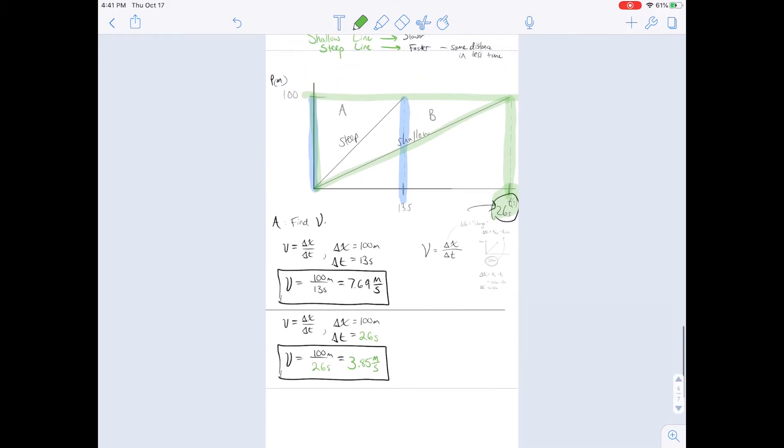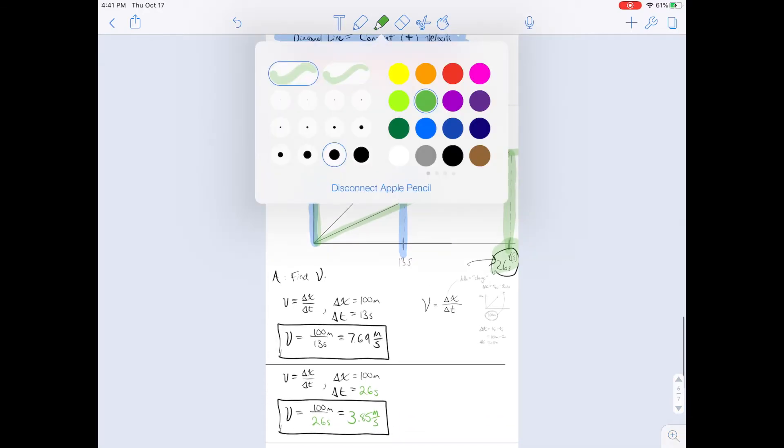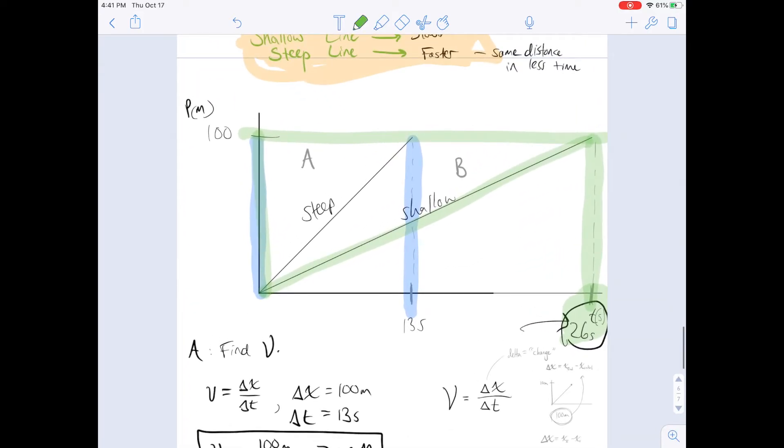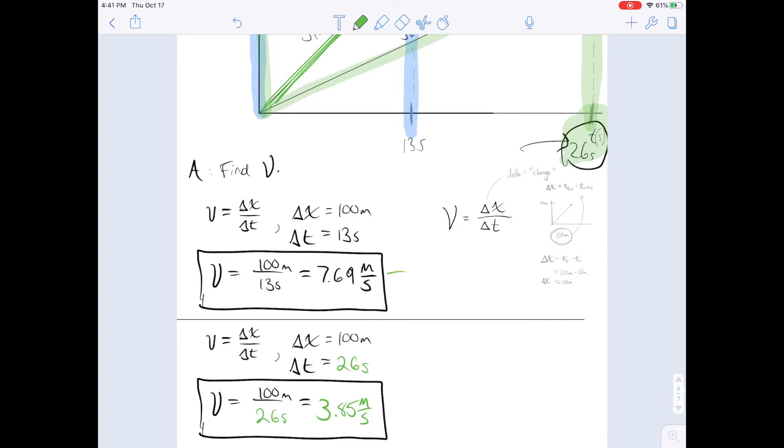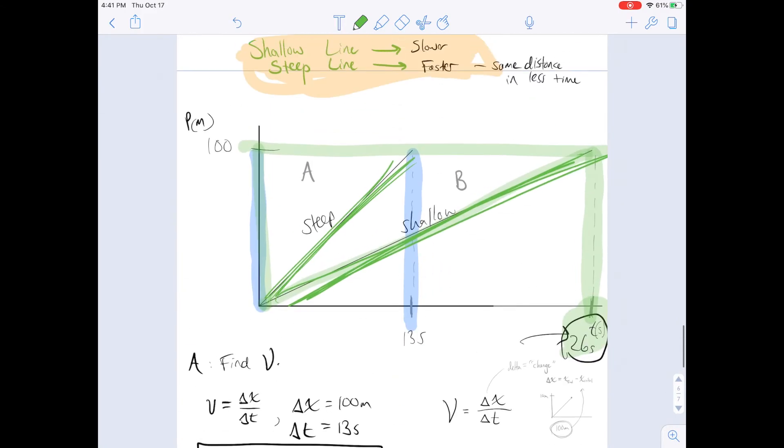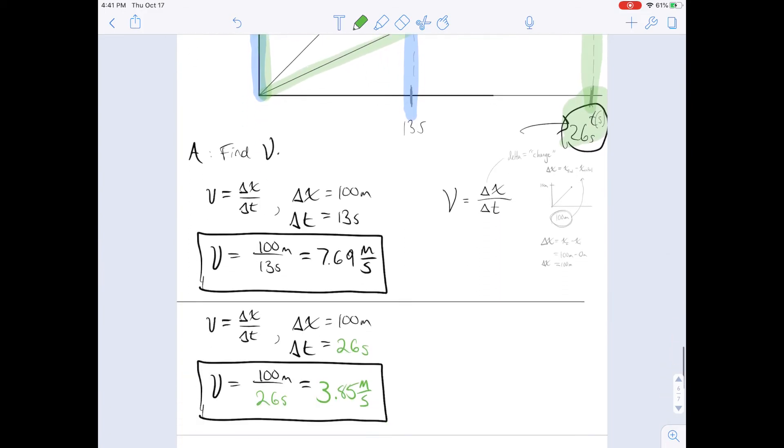We said in the last video that a shallow line was slower and a steeper line was faster. Well, here we go. So now we've got a steep line, which ends up corresponding to 7 meters per second, and a shallow line, which ends up corresponding to 3. So we can clearly see numerically, as well as in terms of our physical understanding, the shallow line is going to be the line that is slower.